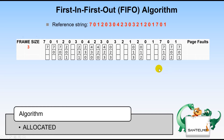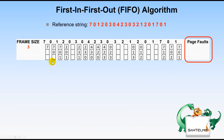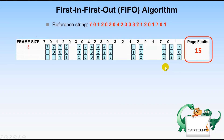After allocating all the pages, we count the page faults by counting all allocations made. The total comes to 15 page faults using a frame size of 3 with this reference string.